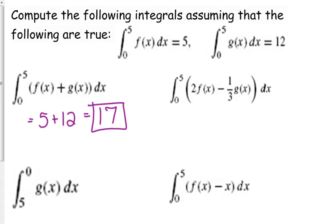We can do linear combinations of that. The next example there is combining the idea of the constants and putting the two functions together. So we've got 2 times 5 minus 1 third times 12, so that would give us 10 minus 4, which is 6.